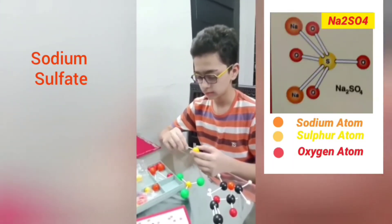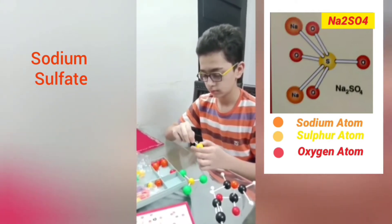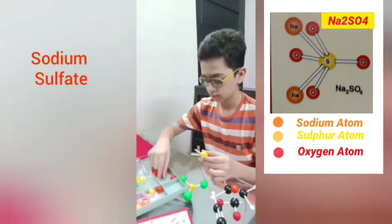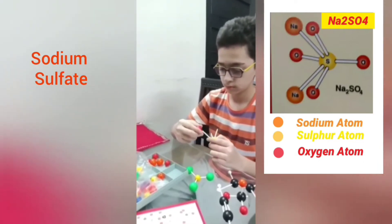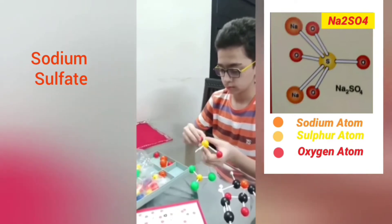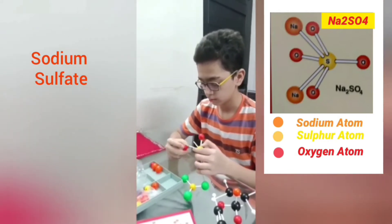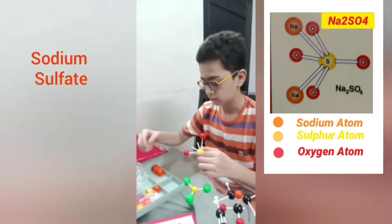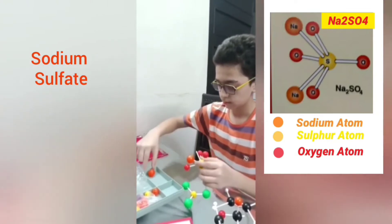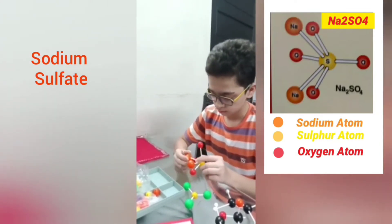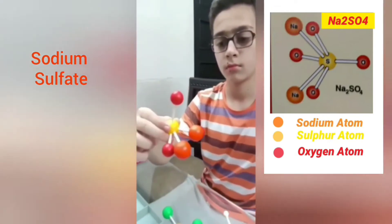Sodium sulphate is an inorganic compound which is the sodium salt of sulphuric acid. It is made up of two sodium atoms, one sulphur atom, and four oxygen atoms. In this ball and stick model of sodium sulphate, the sodium atom is represented by an orange ball, the sulphur atom by a yellow ball, and the oxygen atom by a red ball. So the sodium sulphate model is ready.